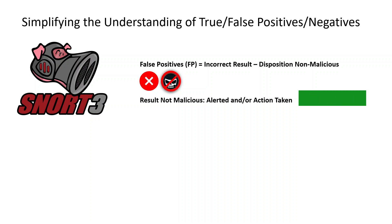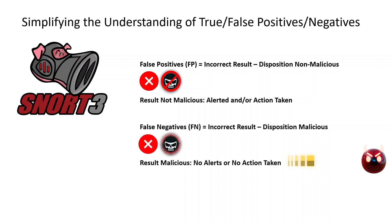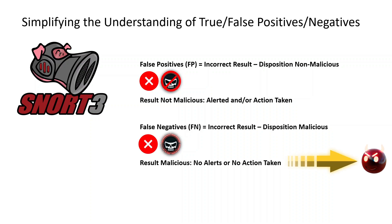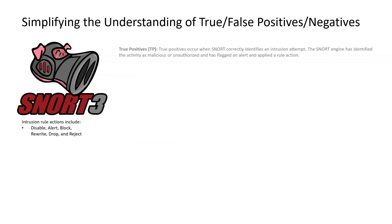False negatives are bad. This is an incorrect result where the disposition is malicious, but it wasn't detected. Although the activity is malicious, there was no alert or action taken — so we didn't even know it took place.